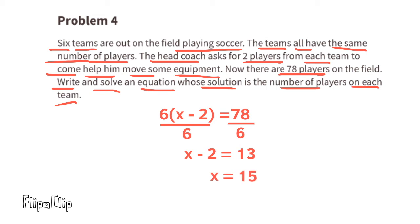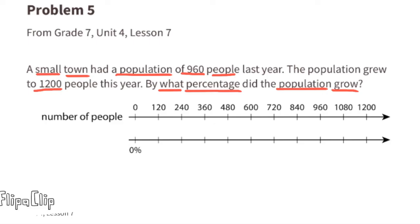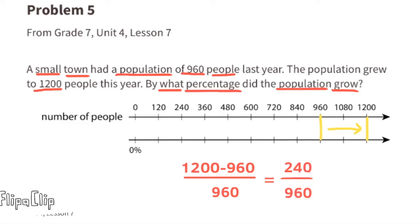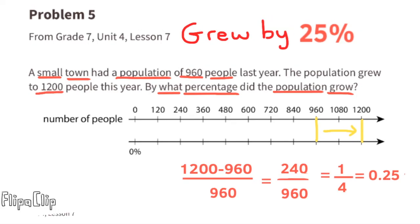Problem number five, from 7th grade Unit 4, Lesson 7: a small town had a population of 960 people last year and grew to 1,200 this year. Using a double number line with number of people on top and percentage on the bottom, the difference is 1,200 minus 960, which equals 240. And 240 divided by 960 equals one fourth, or 0.25, which is 25 percent. The population grew by 25 percent.